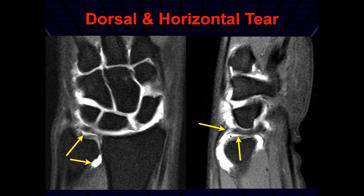So this is both a horizontal and a vertical component tear of the dorsal aspect of the disc. And a scapholunate ligament tear — this was the membranous portion — but we can see there's some diastasis and a type two lunate.